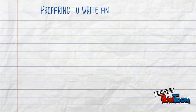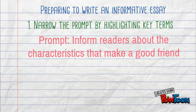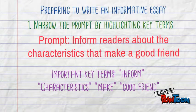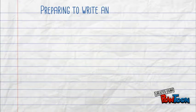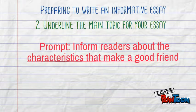There are a few key steps in preparing to write an informative essay. The first step is to narrow the prompt by highlighting key terms. View the example prompt here and review how we chose the important key terms for this prompt. The second step is to underline the main topic, which eliminates anything that might distract you from the main focus of the essay. Notice in our prompt below that the main focus is characteristics that make a good friend.